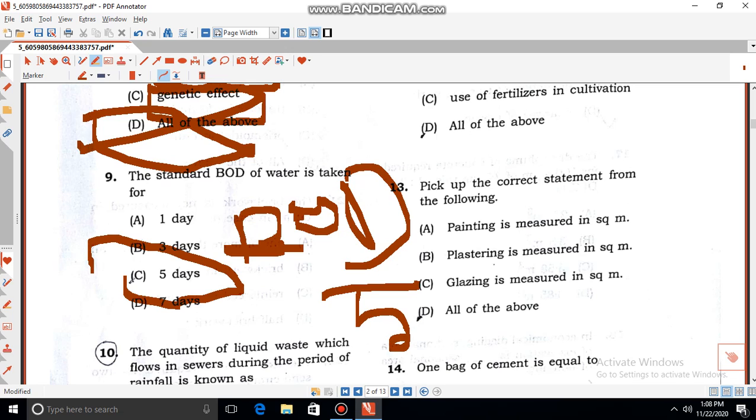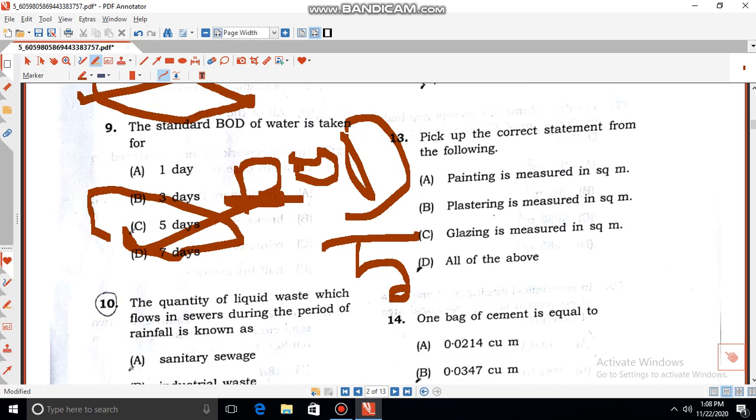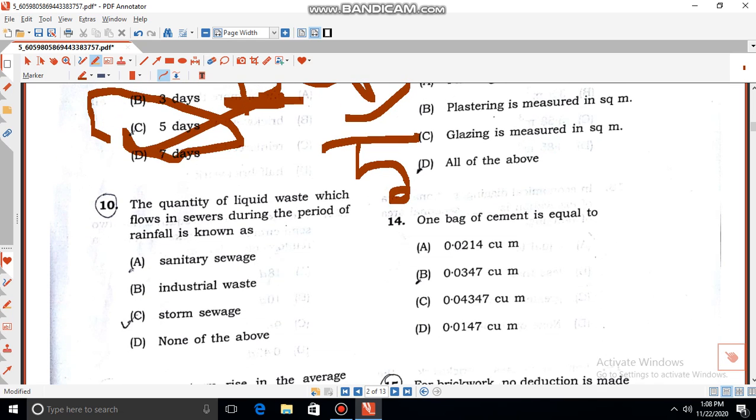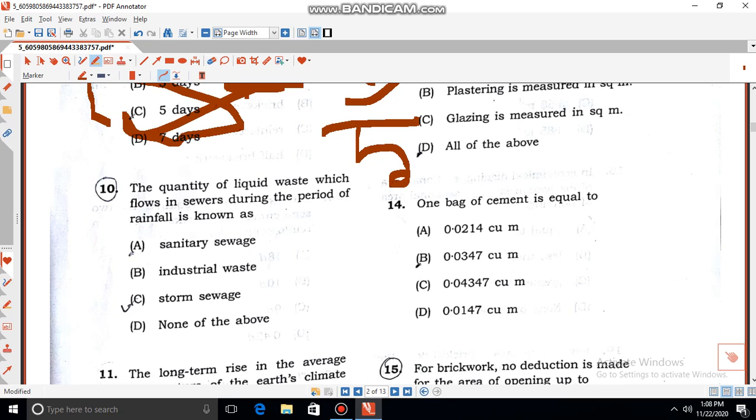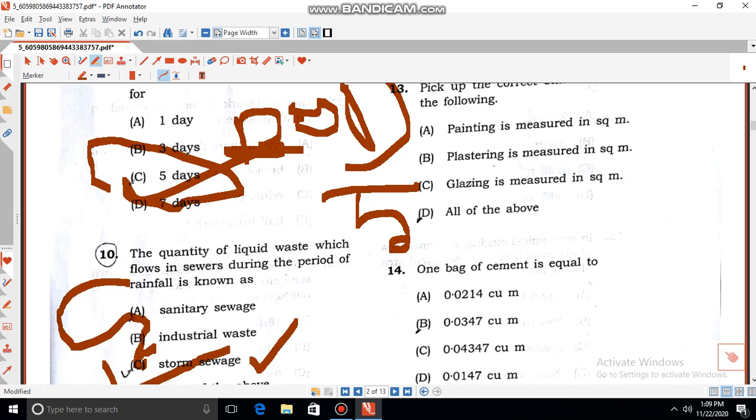The quantity of liquid waste which flows in sewers during the period of rainfall is known as... Rainfall is always associated with storm water. So our correct option is storm water. This option C is correct. Okay, thank you.